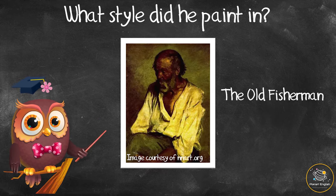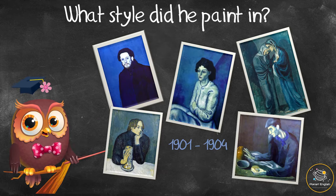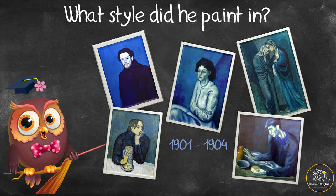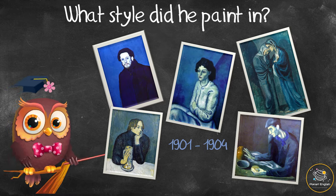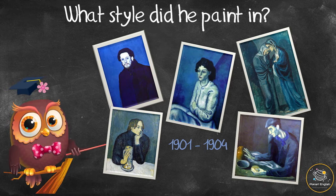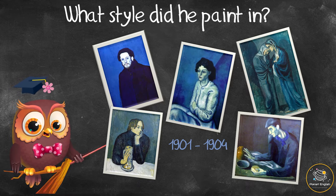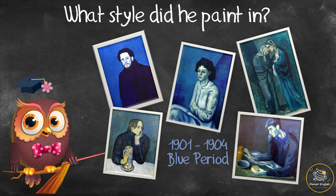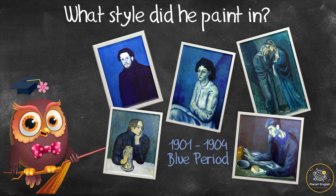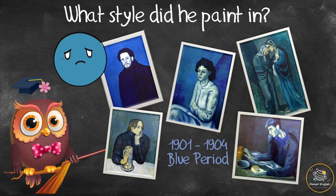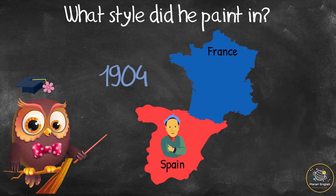At only 14 years old he painted The Old Fisherman, which is a very realistic painting. Between 1901 and 1904, after the death of a close friend, Picasso's paintings were all painted in various shades of blue.